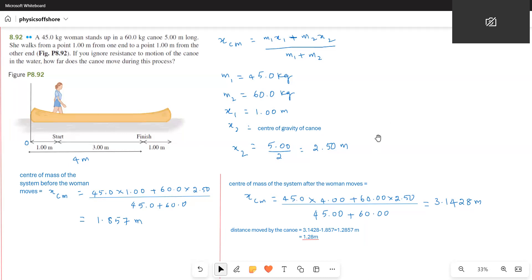It is simple. First of all, you should know where the objects are. This lady is at a distance of 1 meter from the origin and the center of gravity of the canoe is 2.5 meters from the origin. Before the woman moves to the other end, what is the center of mass of the system? The difference between these two gives the distance moved by the canoe.